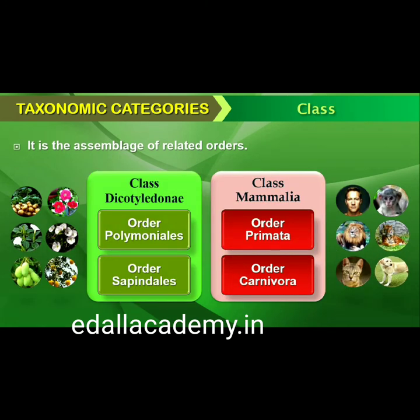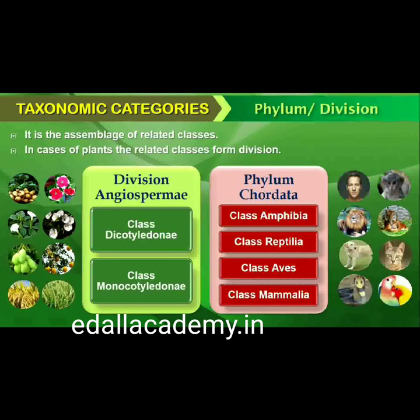The class category includes related orders. For example, order Primata comprising monkey, gorilla and gibbon is placed in class Mammalia along with order Carnivora that includes animals like tiger, cat and dog. Class Mammalia has other orders also. Classes comprising animals like fishes, amphibians, reptiles, birds along with mammals constitute the next higher category called phylum. All these, based on common features like presence of notochord and dorsal hollow neural system, are included in phylum Chordata. In case of plants, classes with a few similar characters are assigned to a higher category called division.